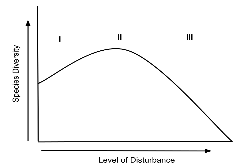IDH is a non-equilibrium model used to describe the relationship between disturbance and species diversity. IDH is based on the following premises: first, ecological disturbances have major effects on species richness within the area of disturbance.